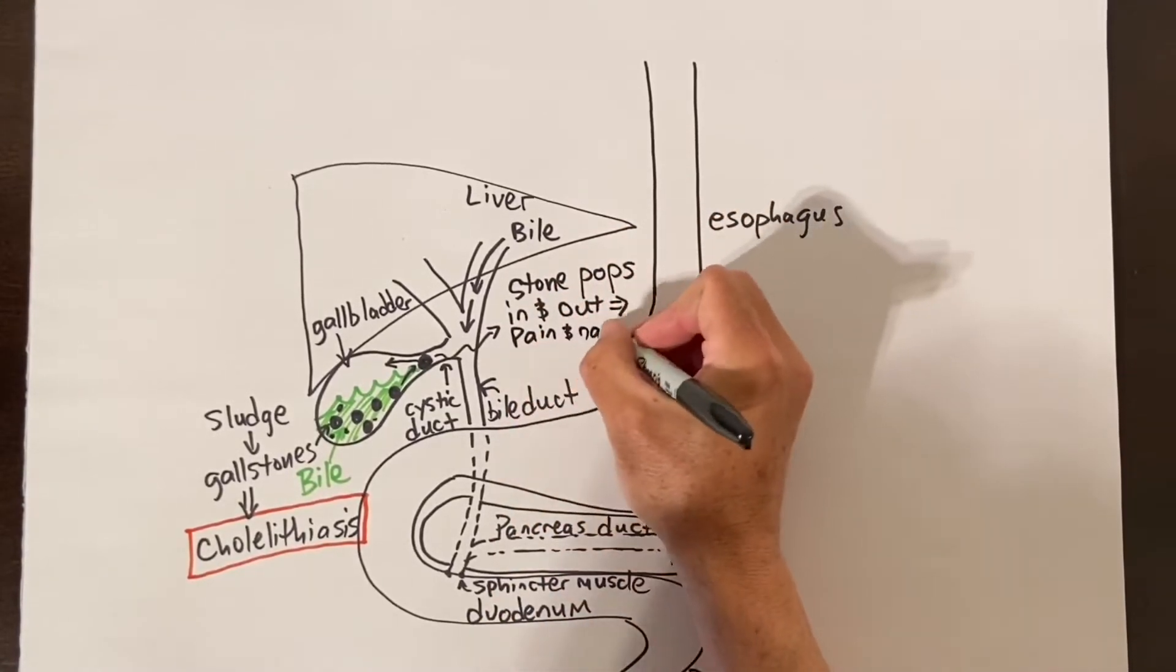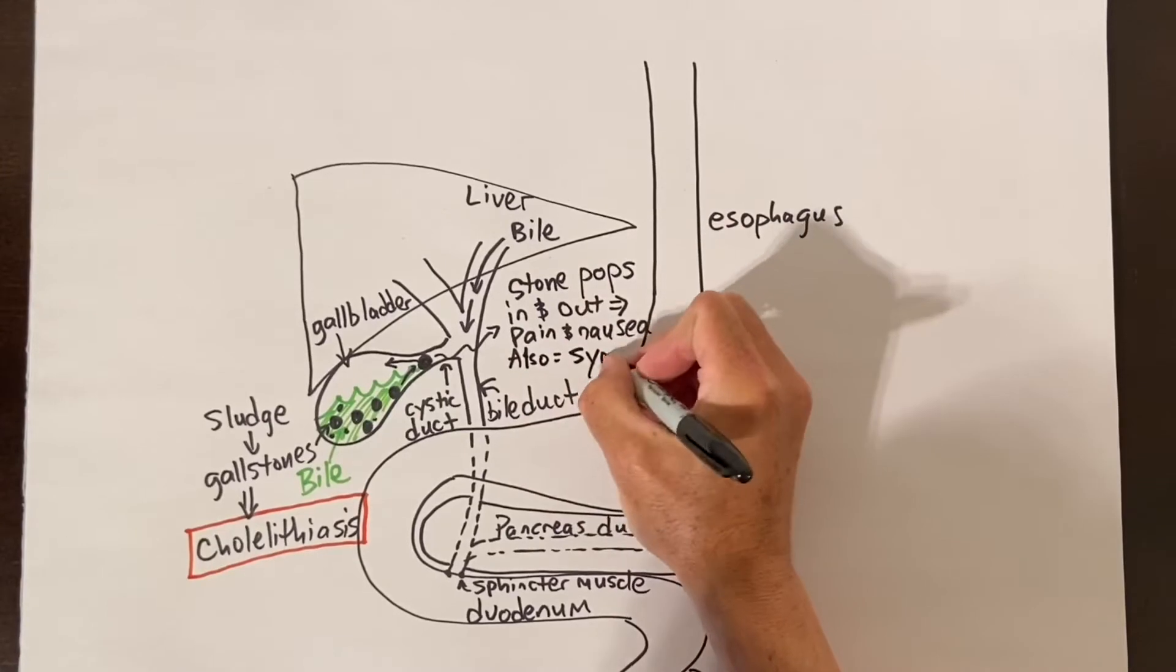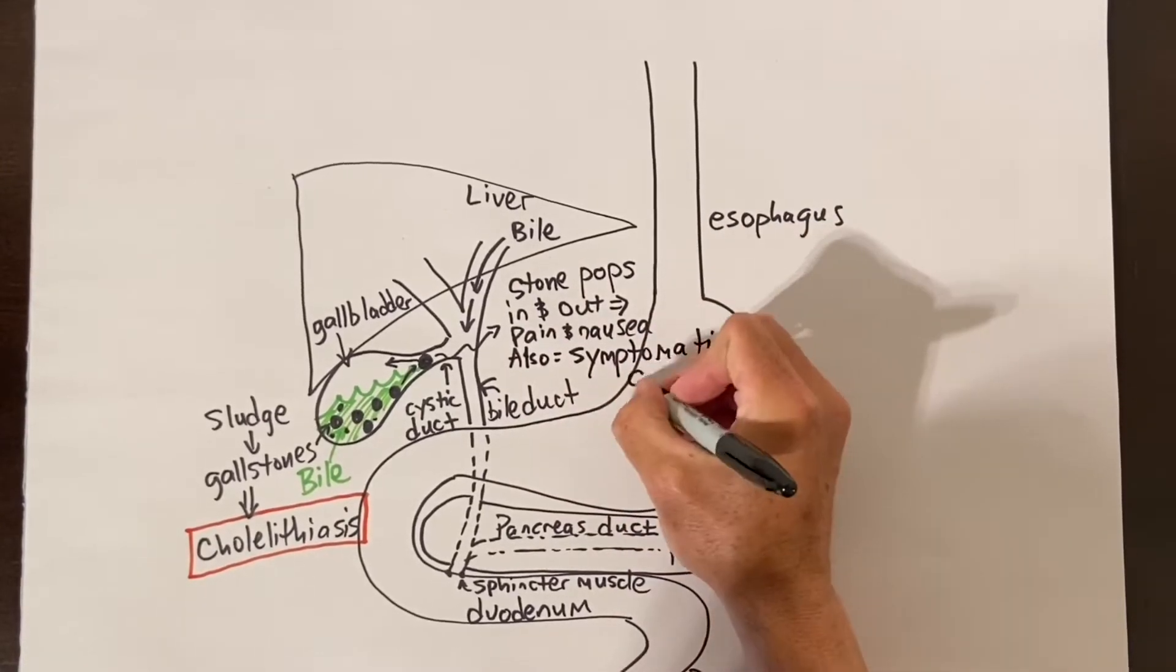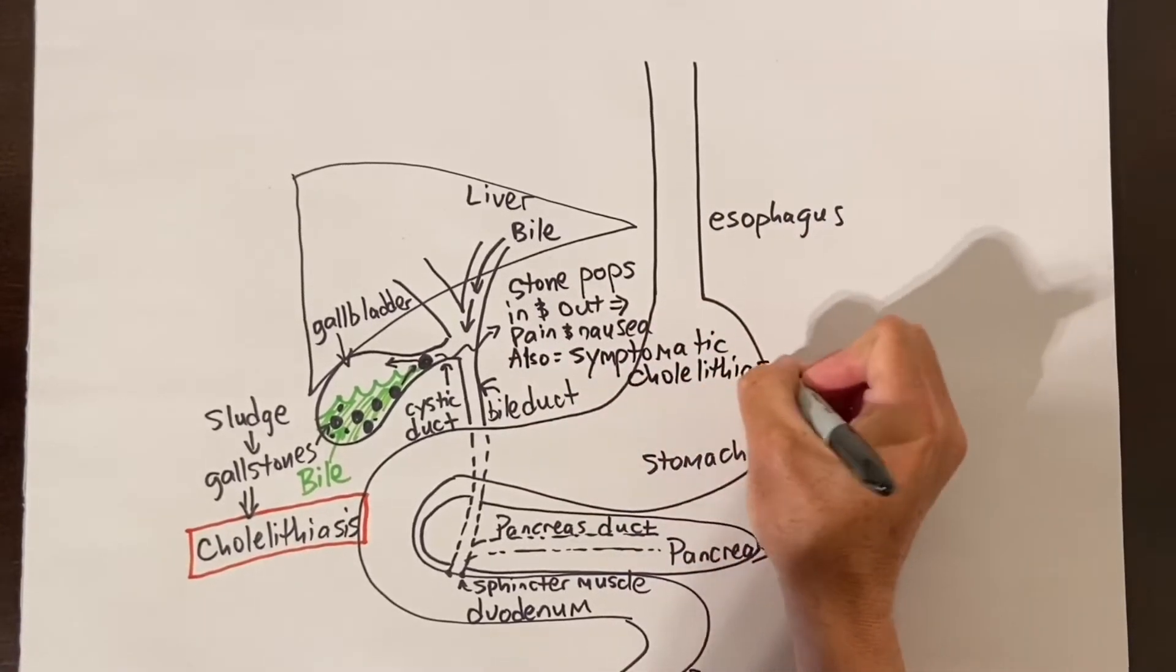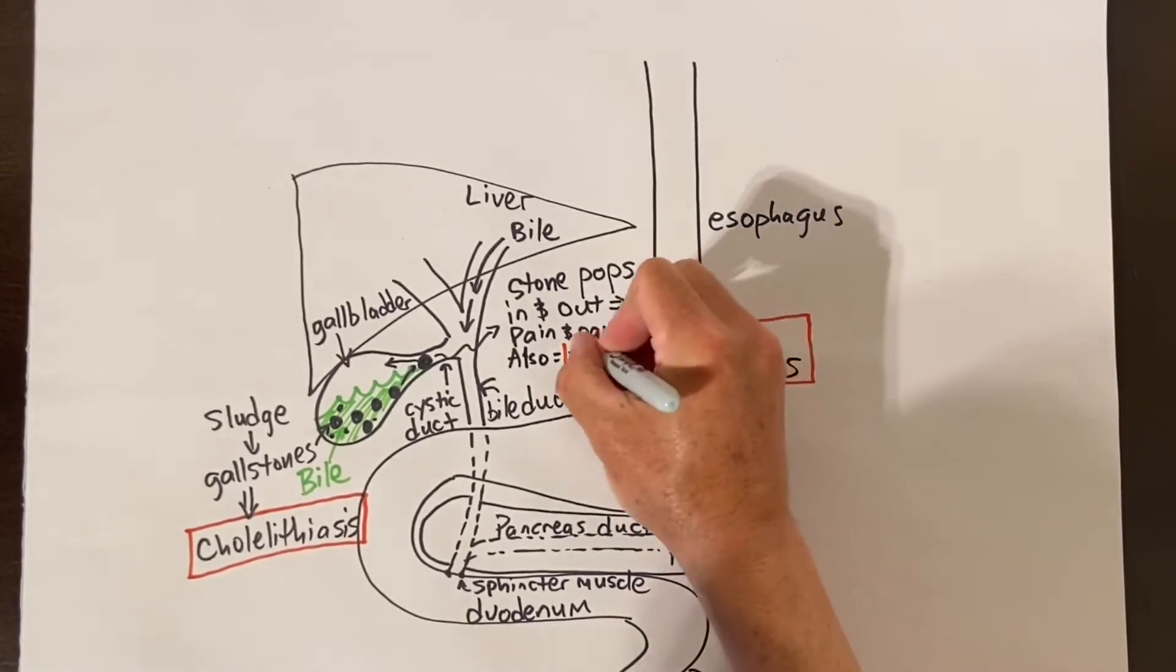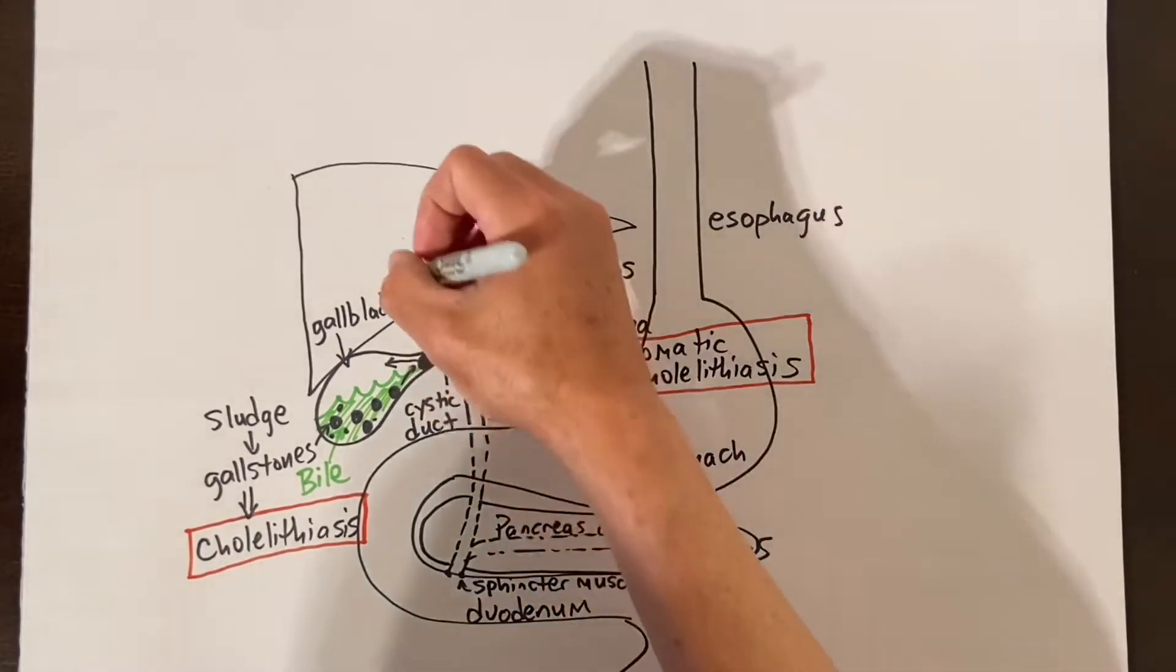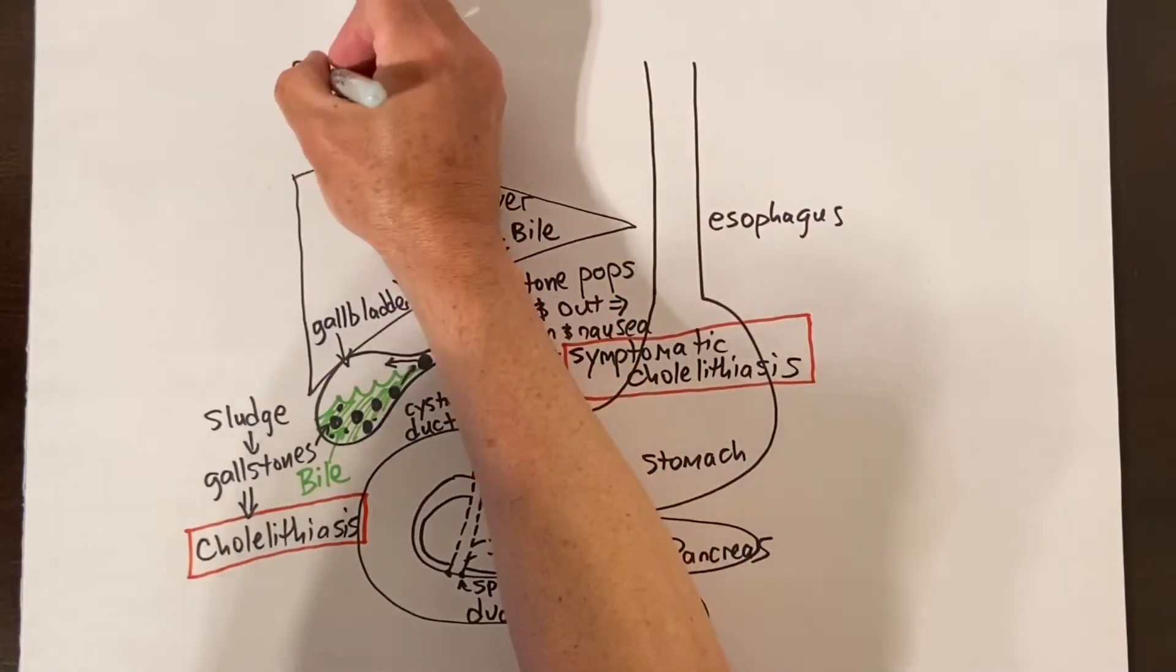So after you eat a meal, the gallbladder squeezes trying to eject the bile but it can't because the gallstone is blocking it. This causes pain in the right upper abdomen that can radiate to the back or to the right shoulder and this can also be associated with nausea. If this is happening and you are noticing problems related to gallstones, then we call this symptomatic cholelithiasis.